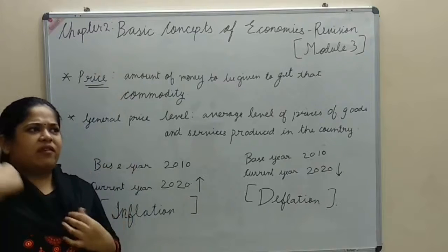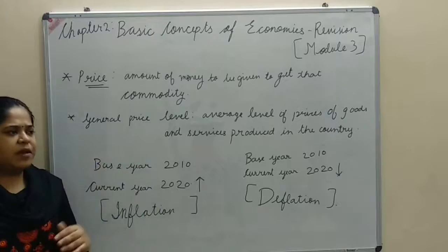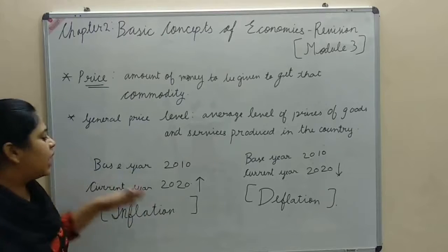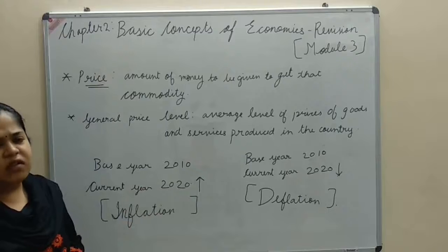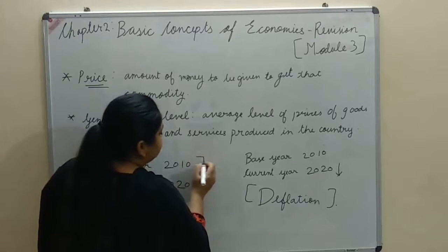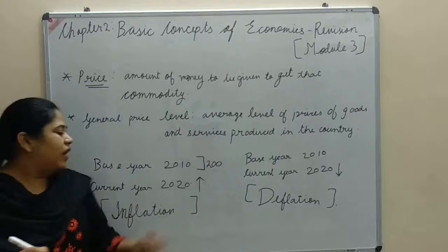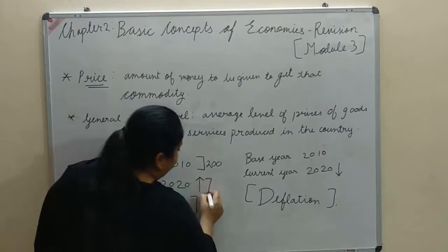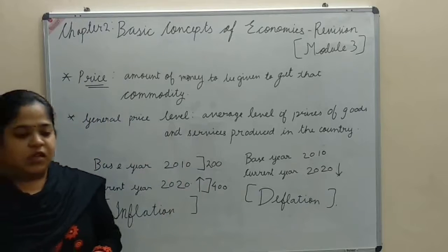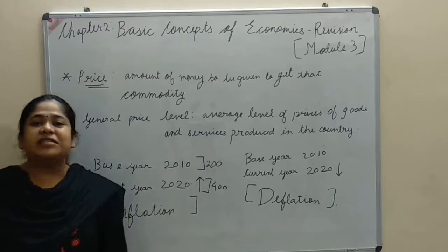Whenever we measure whether there is inflation or deflation, we take a base year. Suppose the general average price level of base year 2010 was 200, and in the current year 2020 the average price level became 400. There is an increase in the general price level — when we compare with the base year and find an increase, we term it as inflation.